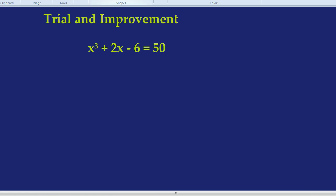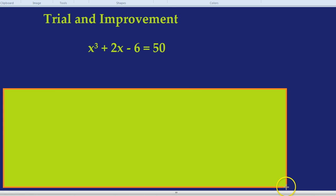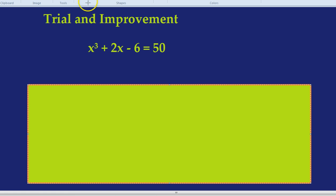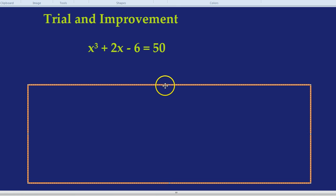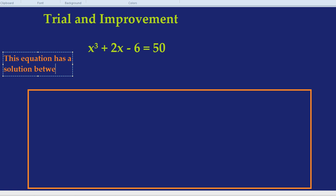What you need for trial and improvement is a nice, lovely table. That is not a nice, lovely table. So I'm going to take away the green. And this table will help us answer the question which we're given. The question would be something like this: This equation above has a solution between 3 and 4. So you'll always be given a range, usually between two different numbers that are next to each other that our solution is in between.